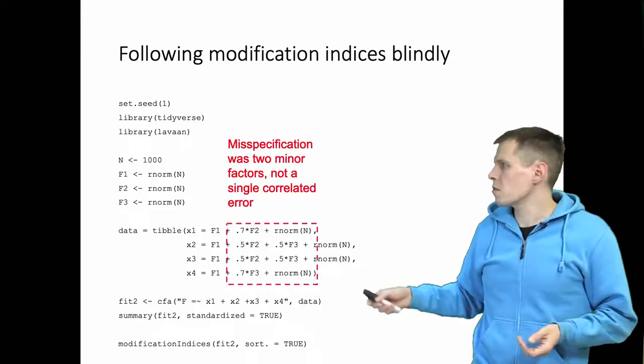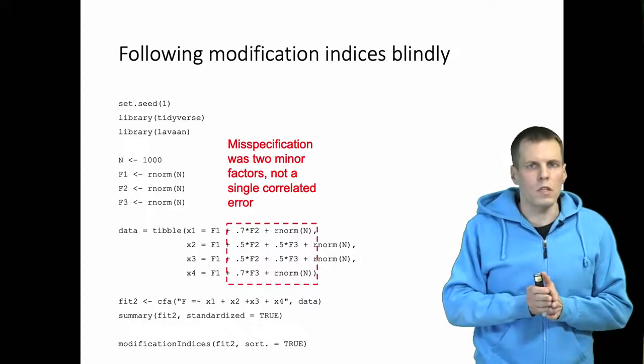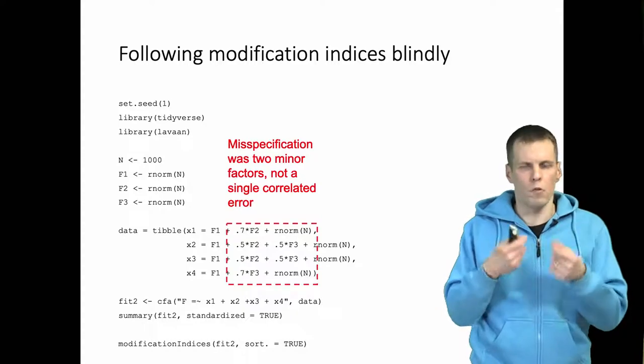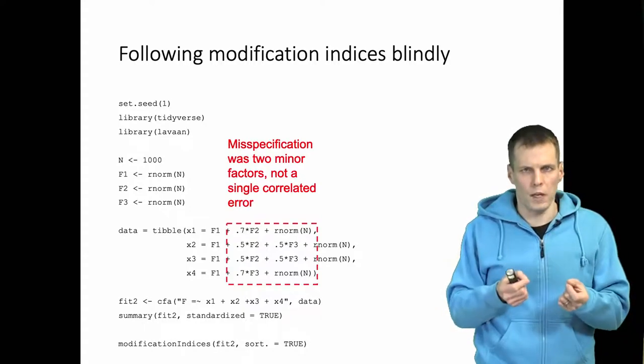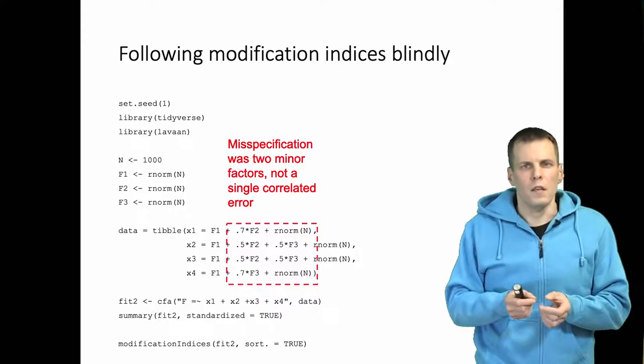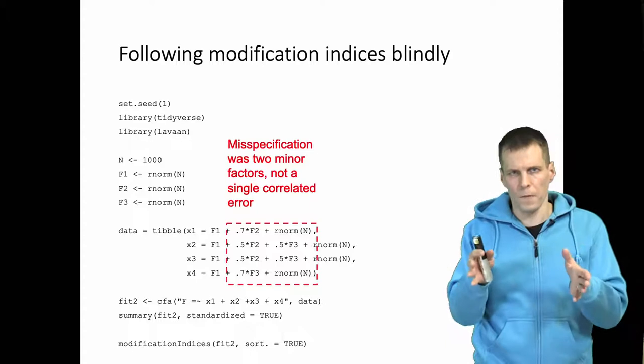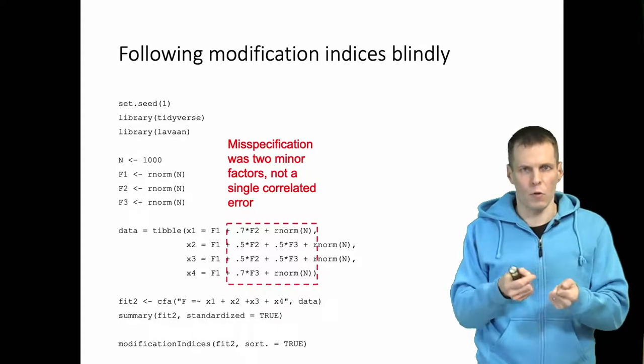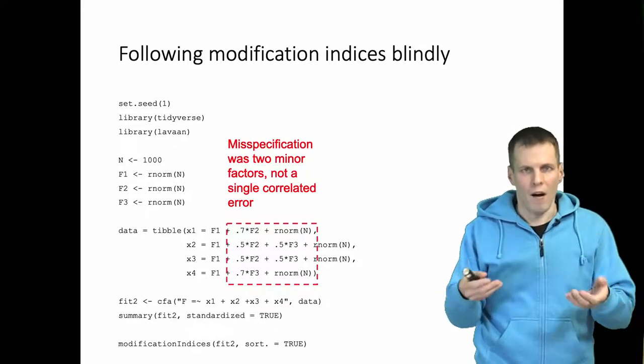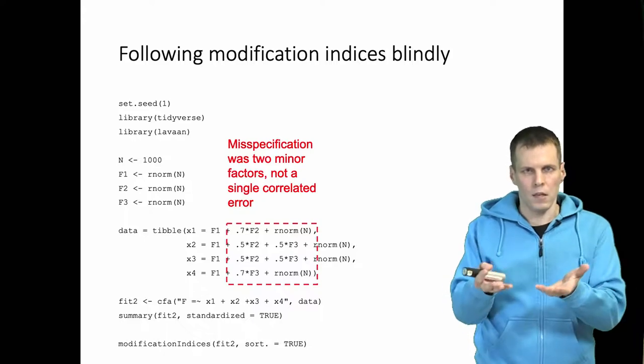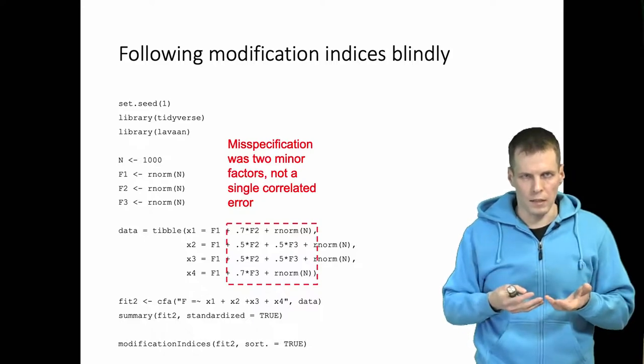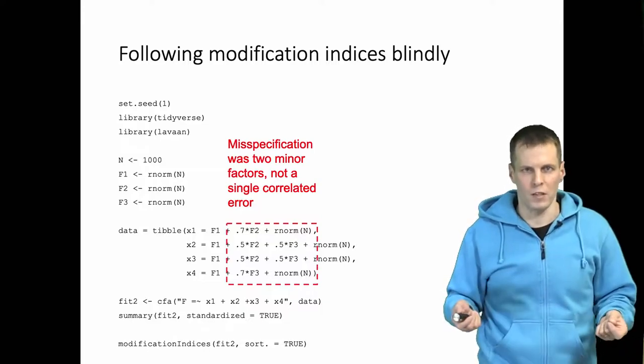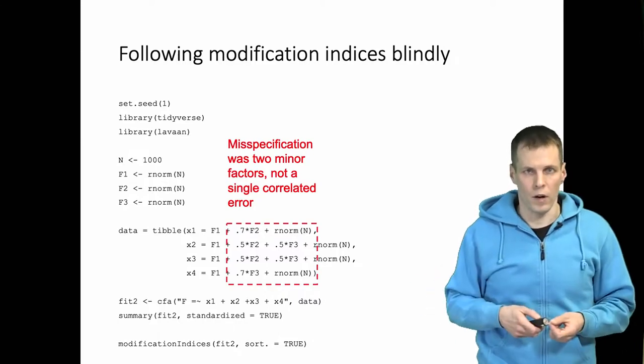So misspecification here is two minor factors, not a single correlated error. There's always a reason for a correlated error, and the reason relates to dimensionality. Instead of following the modification indices blindly, you should be looking at the diagnostics more holistically: running exploratory factor analysis, looking at patterns and residuals, and then looking at what the survey items or whatever data you have are actually about, and whether that tells you something about dimensionality, instead of just looking at what is my highest modification index and then adding parameters based on modification indices to get a well-fitting model.